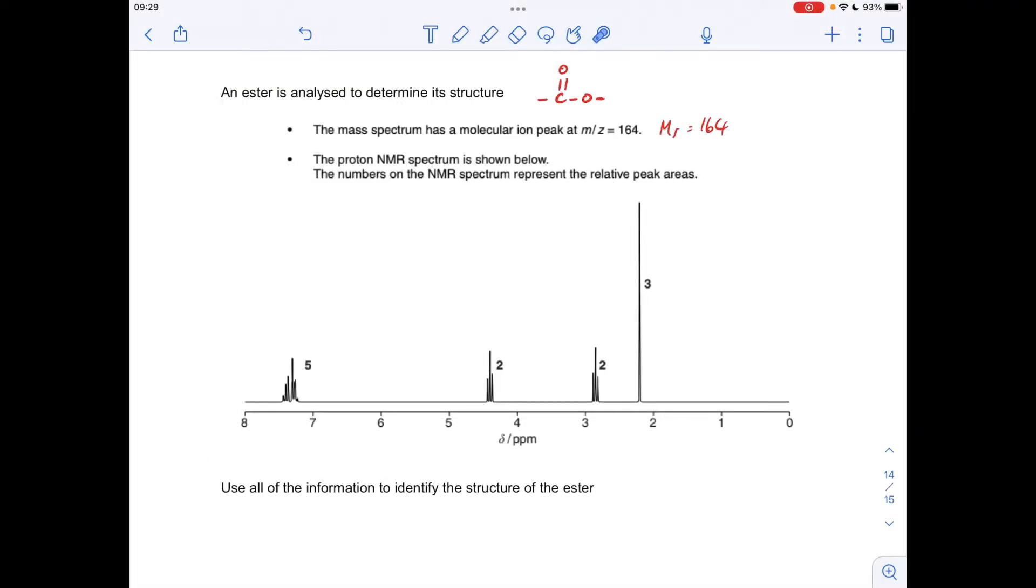Okay, so make a start then. You'll notice I've jotted a couple of things down already. We know it's an ester, so it must have this functional group. The mass spectrum has a molecular ion peak at M over Z 164, so that tells us the MR of the ester is 164. The bulk of the marks obviously is processing the NMR spectrum.